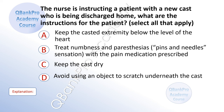The nurse is instructing a patient with a new cast who is being discharged home. What are the instructions for the patient? A. Keep the casted extremity below the level of the heart. B. Treat numbness and paresthesia, pins and needles sensation, with the pain medication prescribed. C. Keep the cast dry. D. Avoid using an object to scratch underneath the cast.